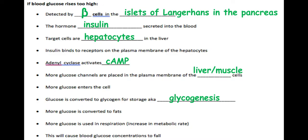This is an example of negative feedback, where the body has recognised that blood glucose has gone outside of its limits and has brought it back within the normal range.